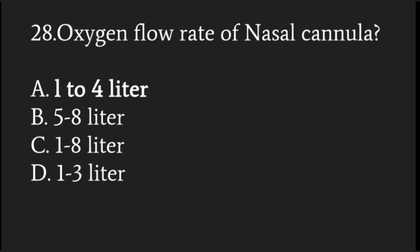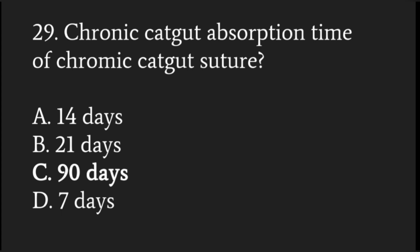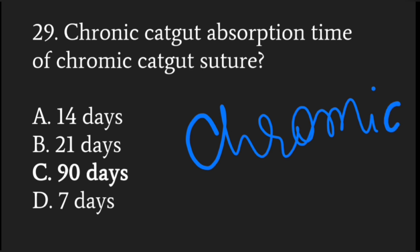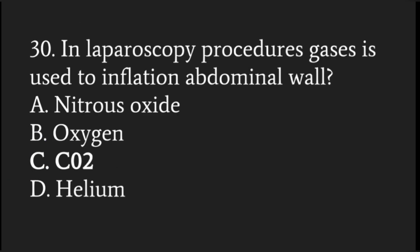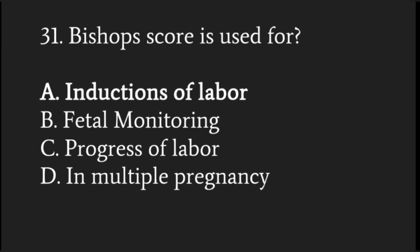Oxygen flow rate of nasal cannula is one to four liters per minute. Chromic catgut suture absorption time is 90 days. In laparoscopic surgery, the gas used for inflation of the abdominal wall is carbon dioxide. Bishop score is used for the induction of labor.